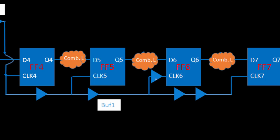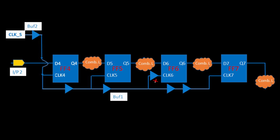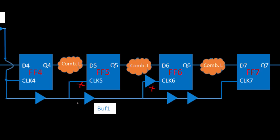So instead of removing or adding a buffer on those paths, you can touch the buffer on the common clock path. If you remove this particular buffer from the common path, the skew decreases in this path from 2 to 1 nanosecond. Since this buffer is common for clock 6 and clock 7, it is not going to affect the timing path between FF4 and FF5 — it is outside that timing path. So this is the right approach.